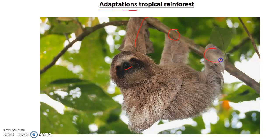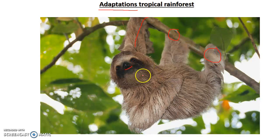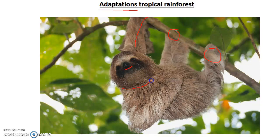This sloth can hang onto branches and onto trees, and because of its feet structure it allows it to do that. Another adaptation is its bone structure in its neck.